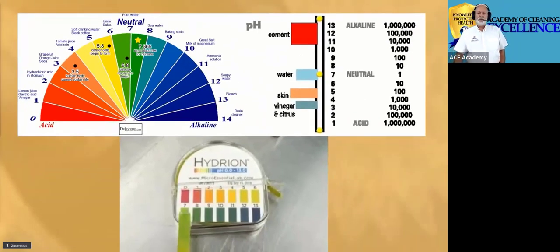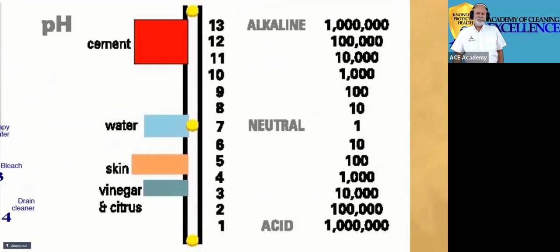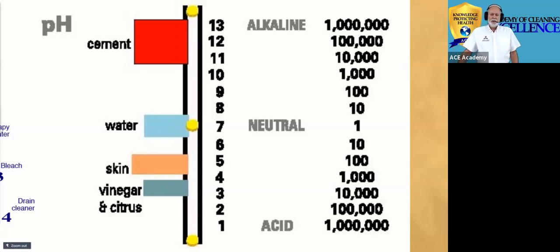Each single number away from neutral is not just one number. Every time you move away from neutral by one number, it multiplies by 10. If I use a chemical stripper or disinfectant in the range of 10 to 12, it's anywhere from a thousand to ten thousand to a hundred thousand times stronger than the blood in my body. If you didn't think pH makes a difference, maybe you do now.